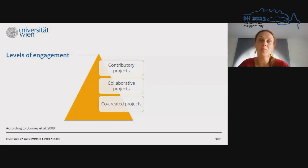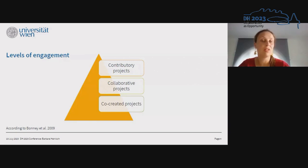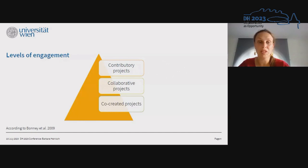In the digital humanities, participants have been contributing to fields such as lexicography, art, history, and so on. There are different levels of engagement: in contributive projects, participants are rather providing data but are not involved in any further research steps. In collaborative projects, participants are active in more than one research step, for example, data collection and data analysis.